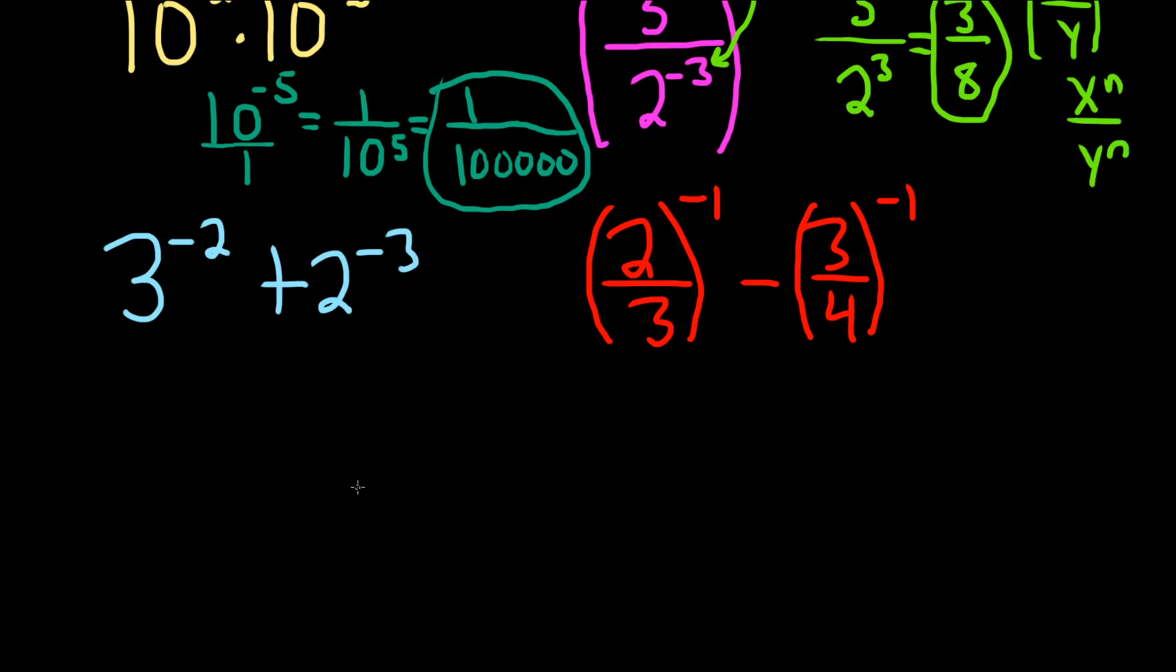This one down here is a little bit harder. We'll start off by making sure the exponents are positive. So as before, what we do there is we bring the number down. So we write it as 1 over 3 squared plus 1 over 2 cubed.